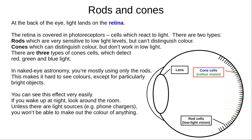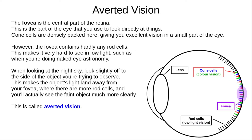You can see this effect easily for yourself — next time you wake up at night, look around the room. You'll probably be able to see where things are, but you won't see their colours, except for bright LEDs like those on phone chargers. The central part of the retina, called the fovea, is packed with cone cells, giving you excellent vision in a small area. But with all those cone cells, there isn't much room for rod cells, making it hard to see faint objects. If you look slightly to the side of the object you're observing, the light will land away from the fovea where there are more rod cells, and you'll see the object more clearly. This technique is called averted vision.